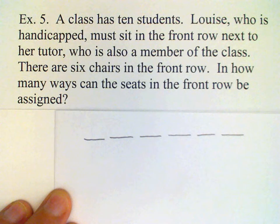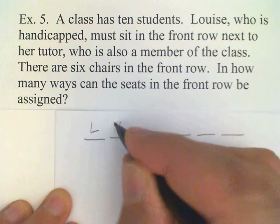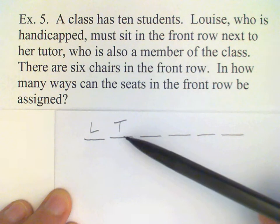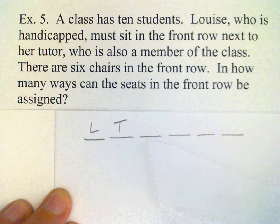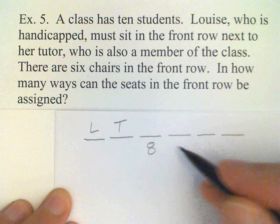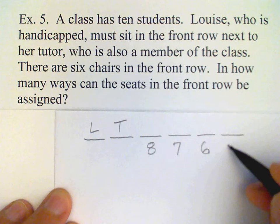Louise and her tutor are going to occupy 2 of those seats, so we'll write LT to indicate that Louise and her tutor are taking up those seats. Now, if there are 10 students in the class, Louise and her tutor account for 2 of those. That leaves 8 possibilities for this next seat. And then there would be 7 for this one, 6, and 5.